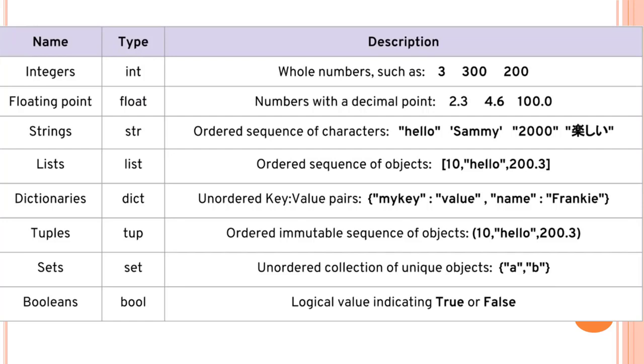We have dictionaries which are key value pairs, tuples are immutable objects, then we have sets which are unordered, and then we have boolean values or logical values. All of these we are gonna go much deeper one by one.